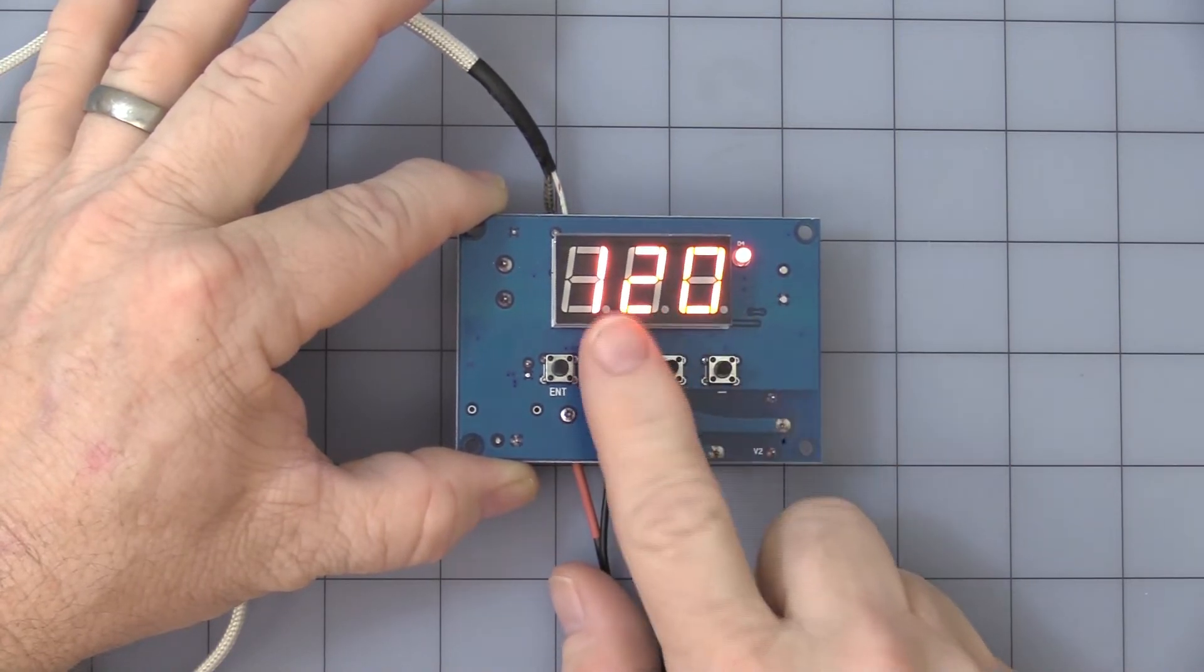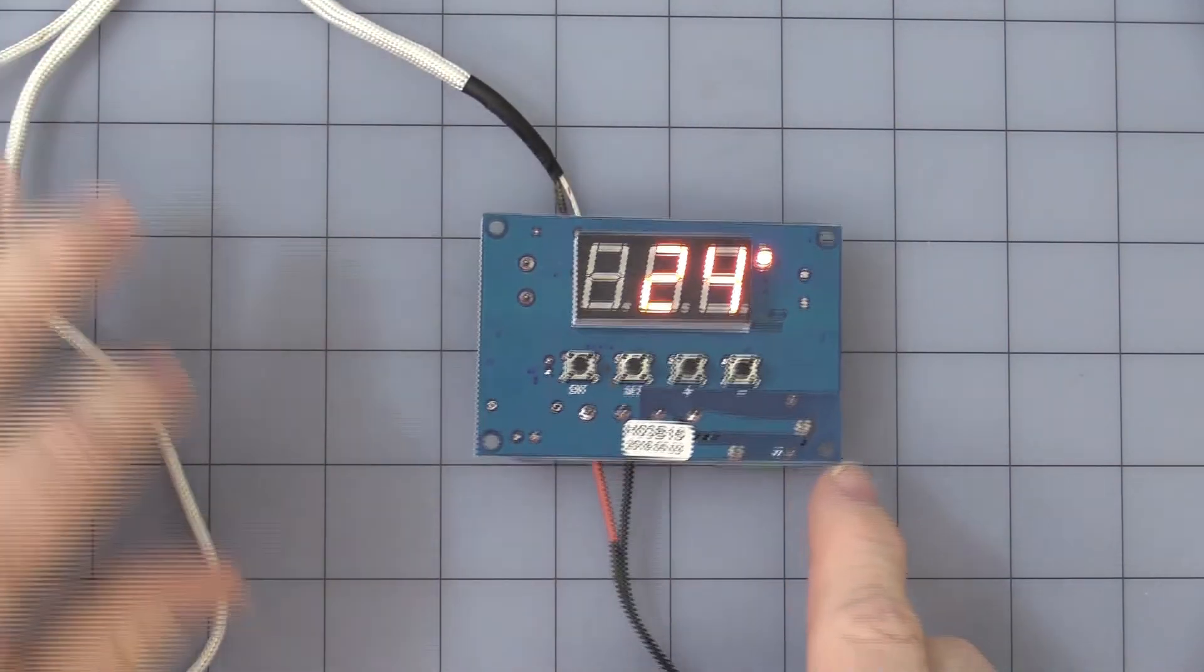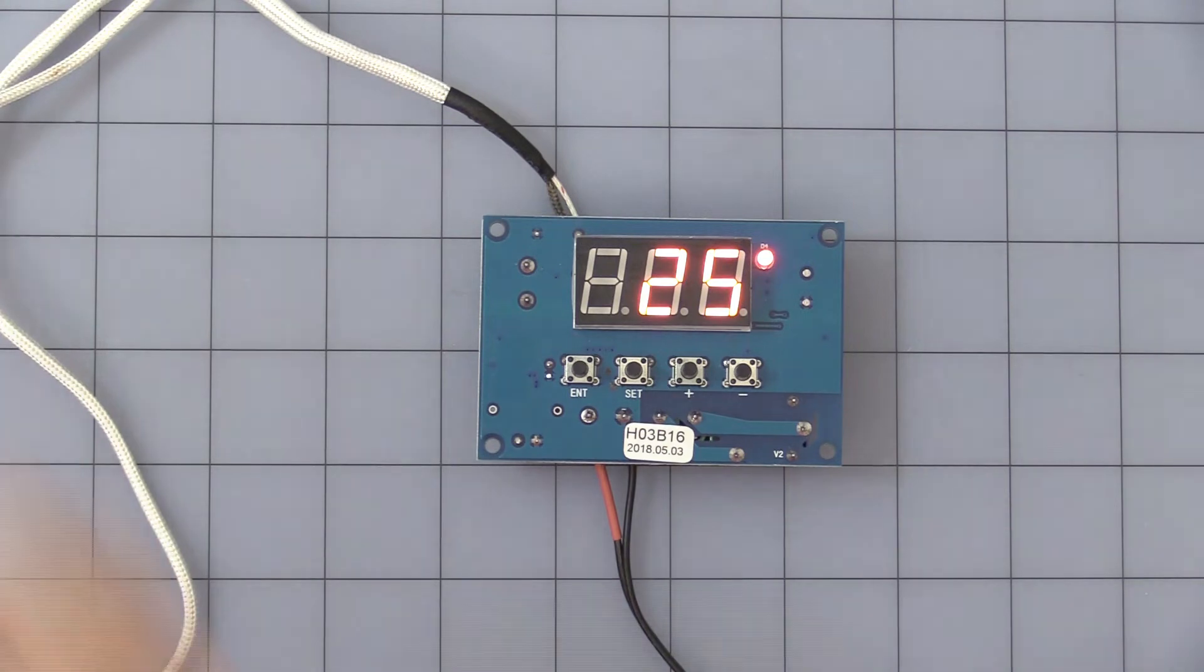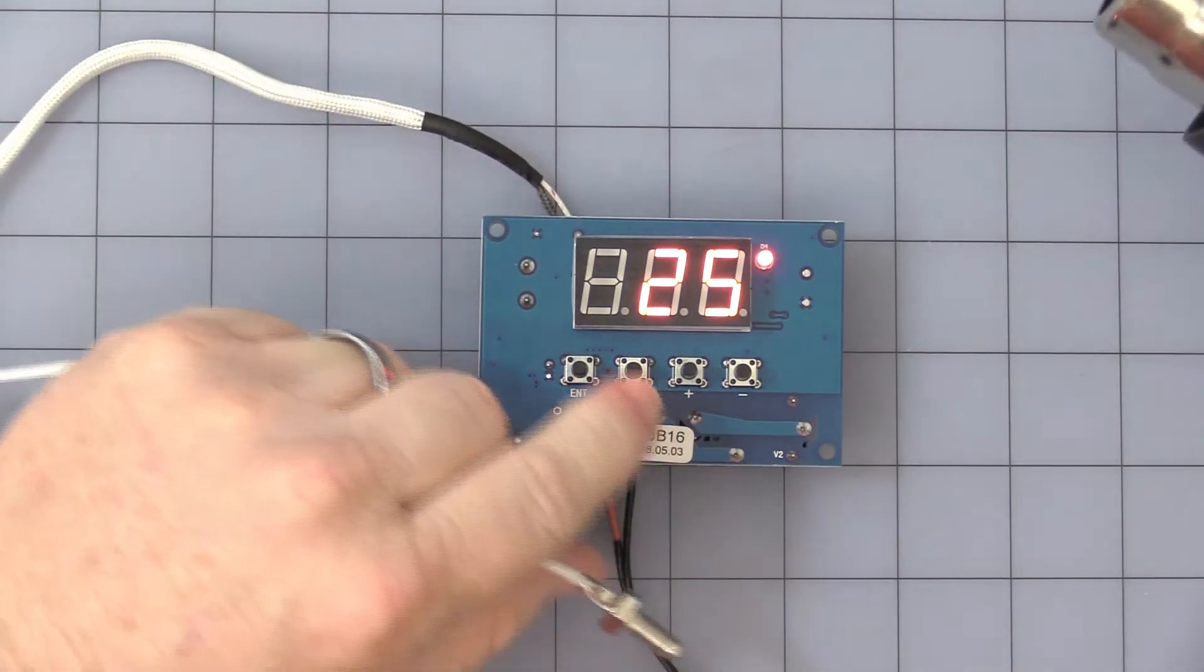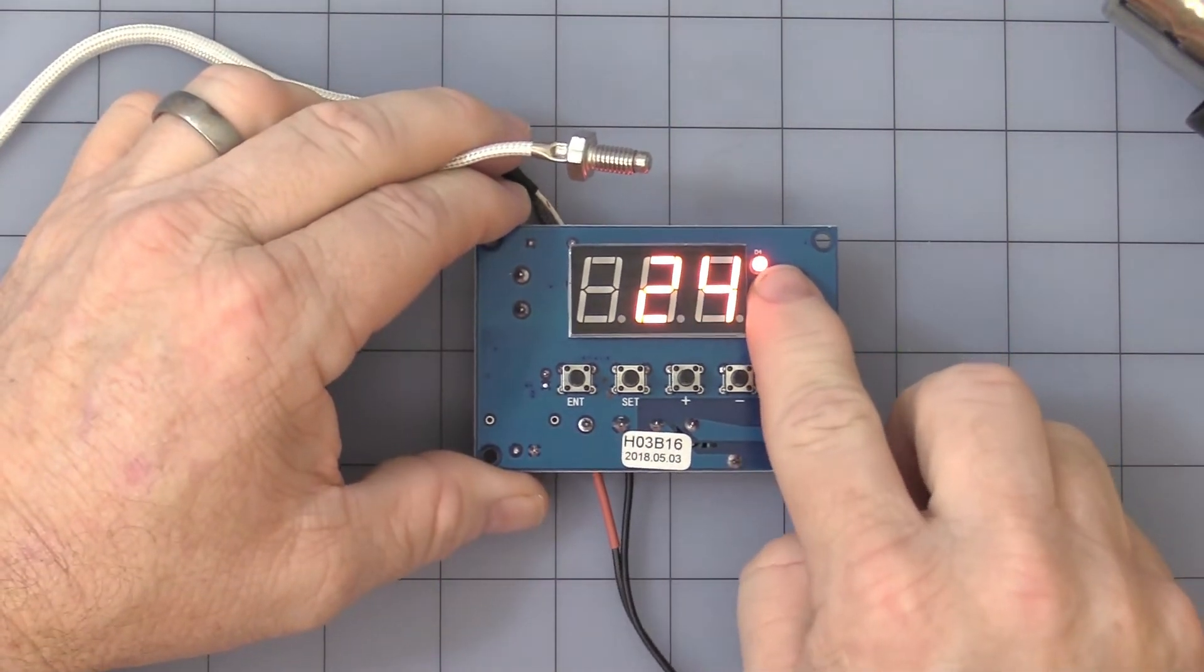Okay, so high temperature set at 120 degrees, and we're at 24. We're in heating mode, and it's set at 100. So right now, as you can see, because we're below 100 degrees C, the relay.